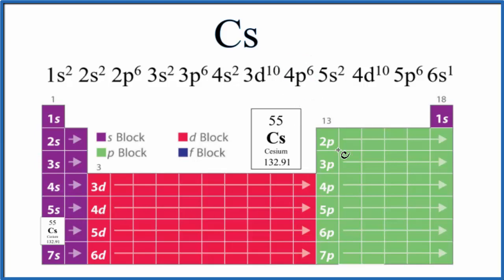Then we go to the 4d10, 5p6. And at this point, when we get to the 5p6, if you add all these numbers up, we've used 54. Remember, we have 55. So the last one, we just put in the 6s1. And then we have the electron configuration for Cs.